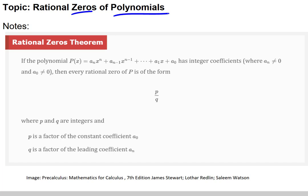The rational zeros theorem says that if the polynomial p(x), defined in the usual general polynomial way, has integer coefficients where a sub n, remember that's the leading coefficient, is not zero, and a sub zero, that's the constant term, so these are the end terms we're talking about here.